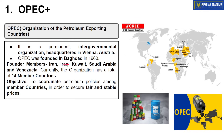OPEC was created in 1960 in Baghdad. The founder members are Iran, Iraq, Kuwait, Saudi Arabia, and Venezuela — the most natural crude oil and natural gas rich countries. Over a period of time, more countries joined, and currently there are 14 countries that are part of OPEC.